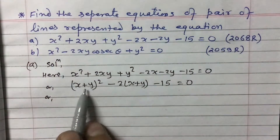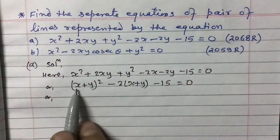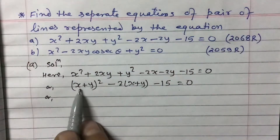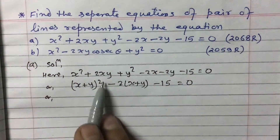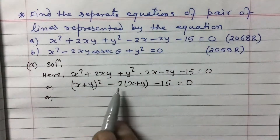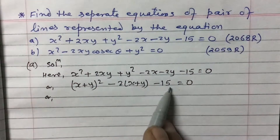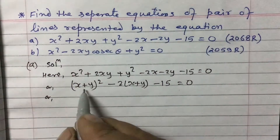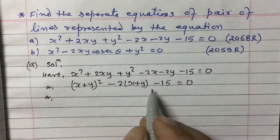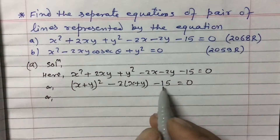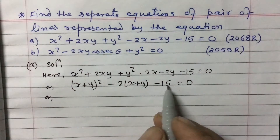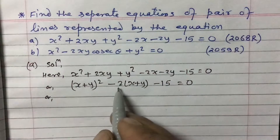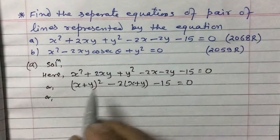This is now in quadratic equation form. If we consider a = (x + y), we get a² - 2a - 15 = 0. We can factorize this using the mid-term break method: the product is 15 and the difference is 2, so we use 5 and 3.